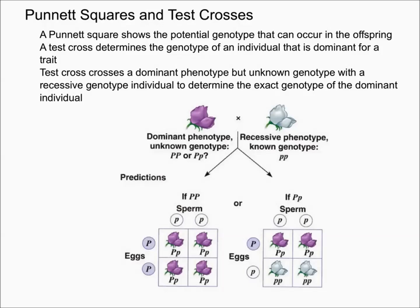If you draw out the Punnett squares, you can see that if the purple flower's genotype was unknown — if it was homozygous dominant — you would have all purple flowers, because all of the flowers would be heterozygous. On the other hand, if the purple flower was heterozygous when crossed with a homozygous recessive, after drawing out the Punnett squares, you would get half white flowers and half purple flowers.